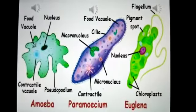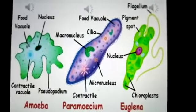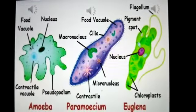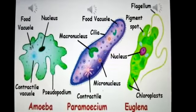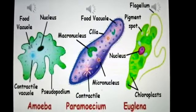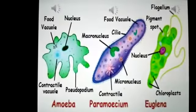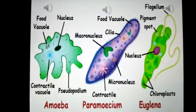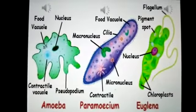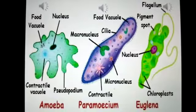The second diagram is paramecium. In paramecium, there are also two vacuoles — food vacuole and contractile vacuole — a nucleus consisting of micronucleus and macronucleus, and small hair-like extensions on its outer surface called cilia. The third diagram is of euglena. In euglena you can also see a central nucleus, a pigment spot, chloroplast, and a long thread-like structure called flagellum.